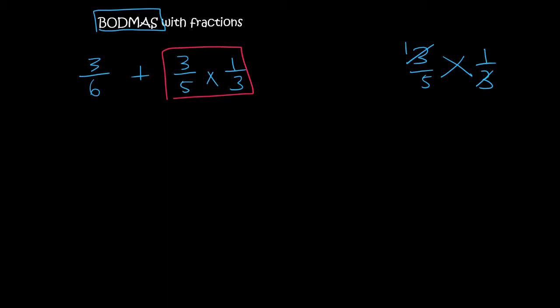So 3 goes into itself once and 3 goes into there once. You could then multiply across so 1 times 1 is 1 and 5 times 1 is 5. I'm then going to put that back into the sum.